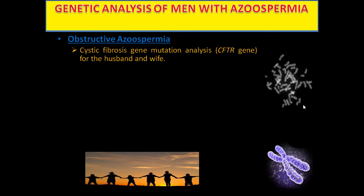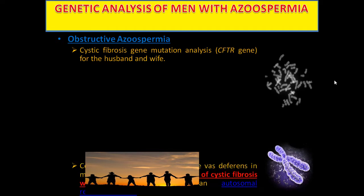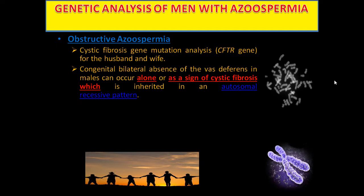Genetic analysis of men with azoospermia. For obstructive azoospermia: cystic fibrosis CFTR gene mutation analysis for both husband and wife, since congenital bilateral absence of the vas deferens in males can occur alone or as a sign of cystic fibrosis.